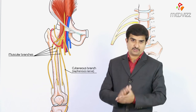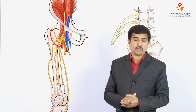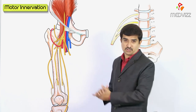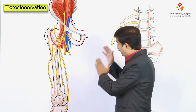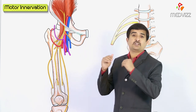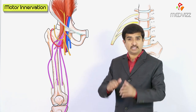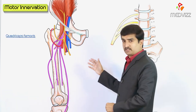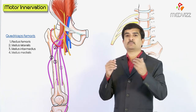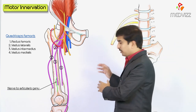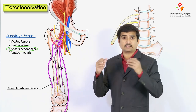Regarding motor innervation, the femoral nerve gives innervation to the iliacus and pectineus muscles. The anterior division innervates sartorius, and the posterior division innervates the quadriceps femoris — which includes rectus femoris, vastus lateralis, vastus intermedius, and vastus medialis. The articularis genu is supplied by a branch from the nerve to vastus intermedius.